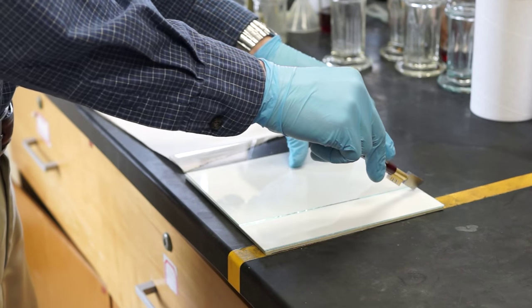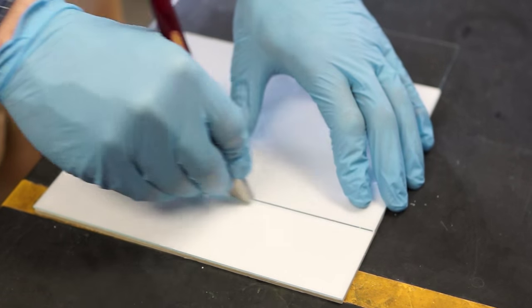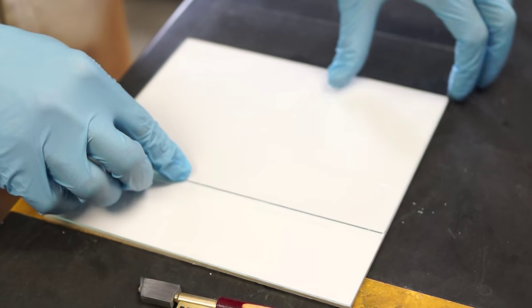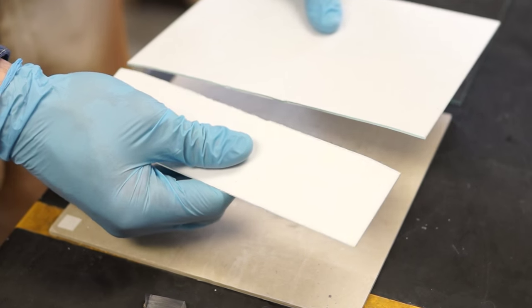Now we'll take our glass cutter and gently score down the side of the glass. Now that the glass has been scored, to break apart the plate, gently lift up the plate and push up through the middle.